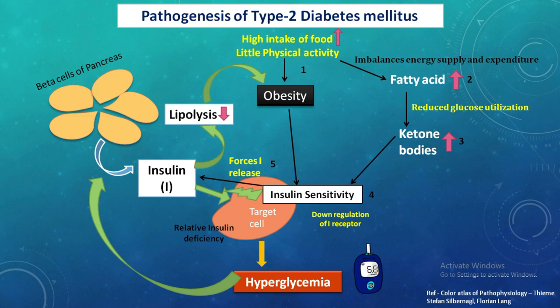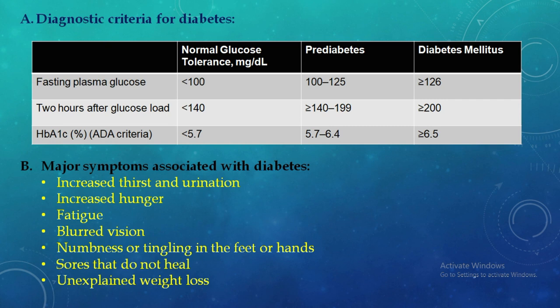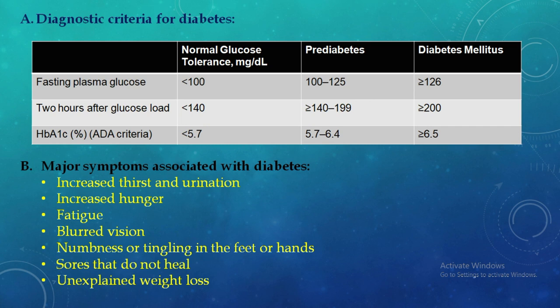Now we will discuss the diagnostic criteria for diabetes. Fasting plasma blood sugar in a normal individual is less than 100 mg/dL, in the pre-diabetic state it is 100 to 125, and in a diabetic patient it is greater than 126. The postprandial glucose load in a normal individual should be less than 140, pre-diabetic is 140 to 199, and diabetic is greater than 200 mg/dL. The American Diabetes Association criteria for glycated hemoglobin: normal is less than 5.7%, pre-diabetic is 5.7 to 6.4%, and diabetic is greater than 6.5%.